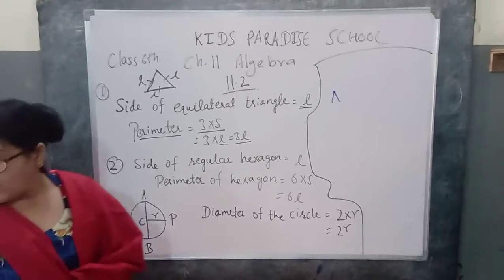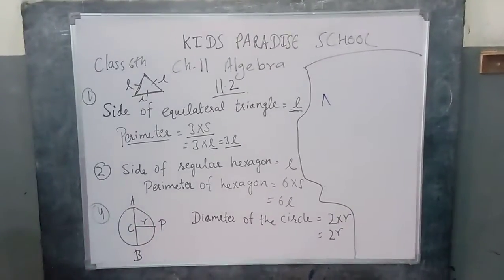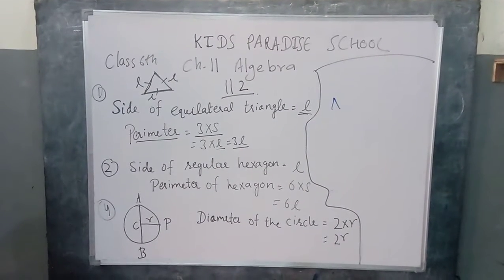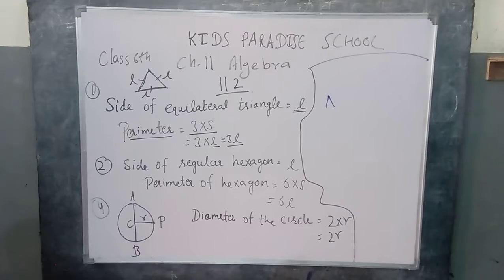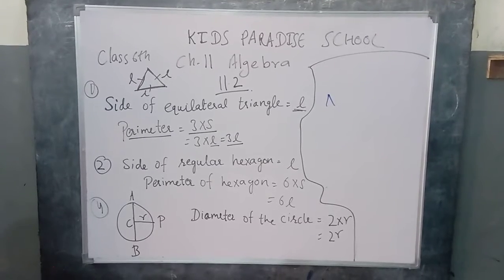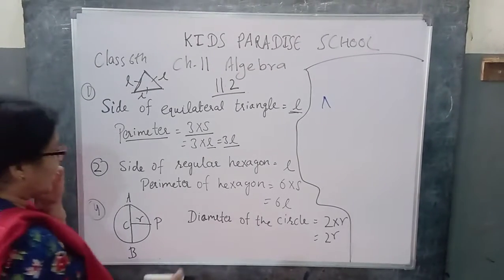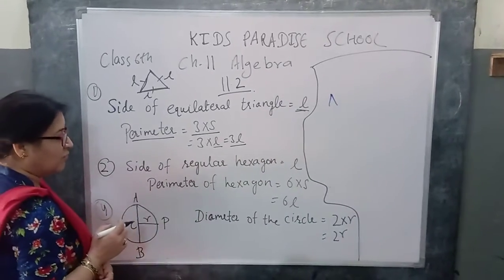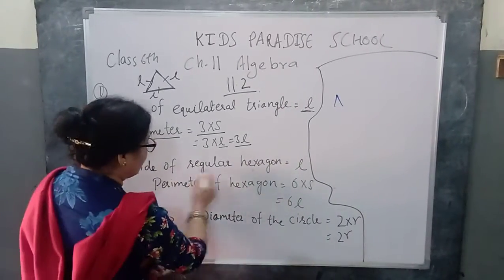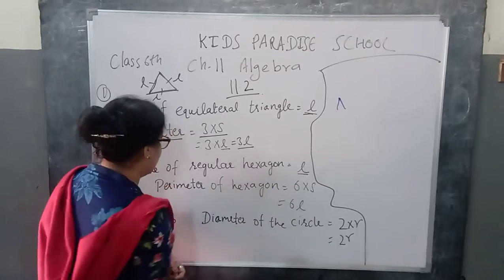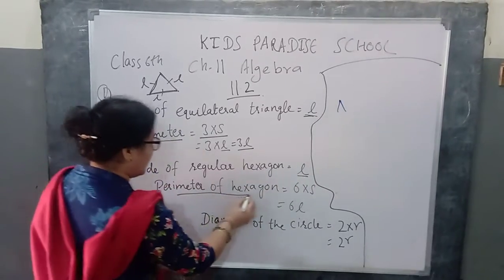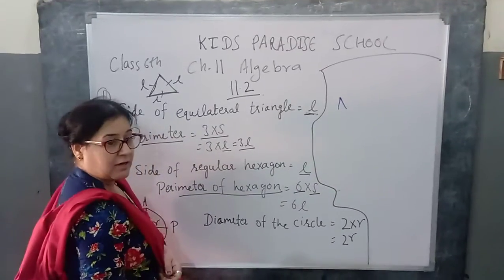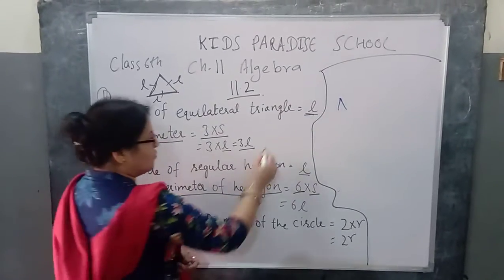Next question hai. Aapko ek hexagon diya rakha hai — regular hexagon. Uski side hai L. Figure is also drawn as figure number 11.10. Find the perimeter. Perimeter kya hogya? Sum of the sides, sum of the boundary lines. Side of the regular hexagon L rakha hai. Perimeter of hexagon kya hogya? Six multiplied by side, because regular means all sides equal.